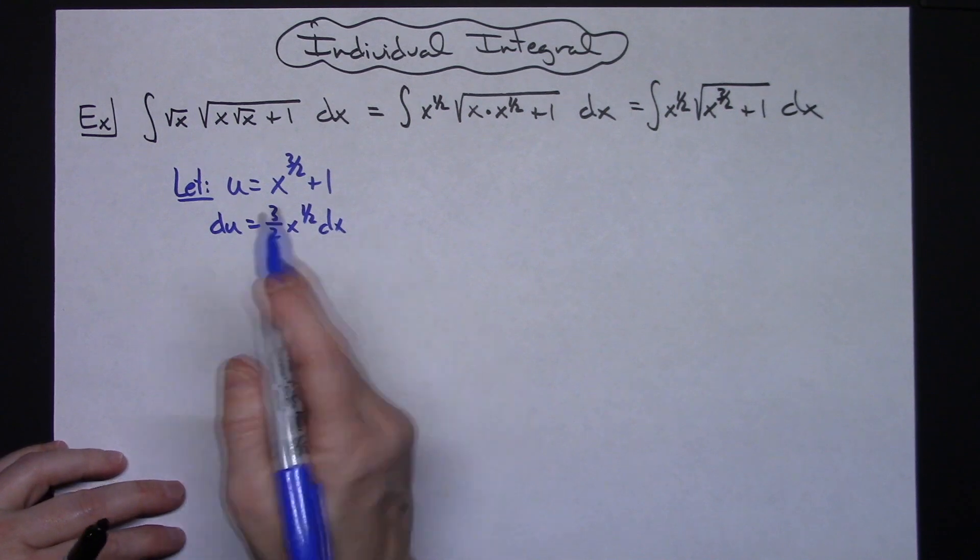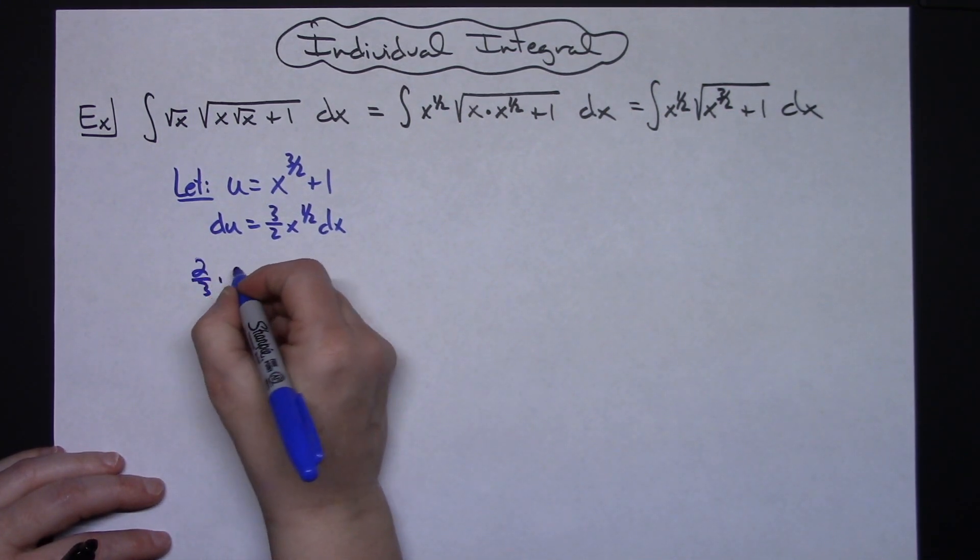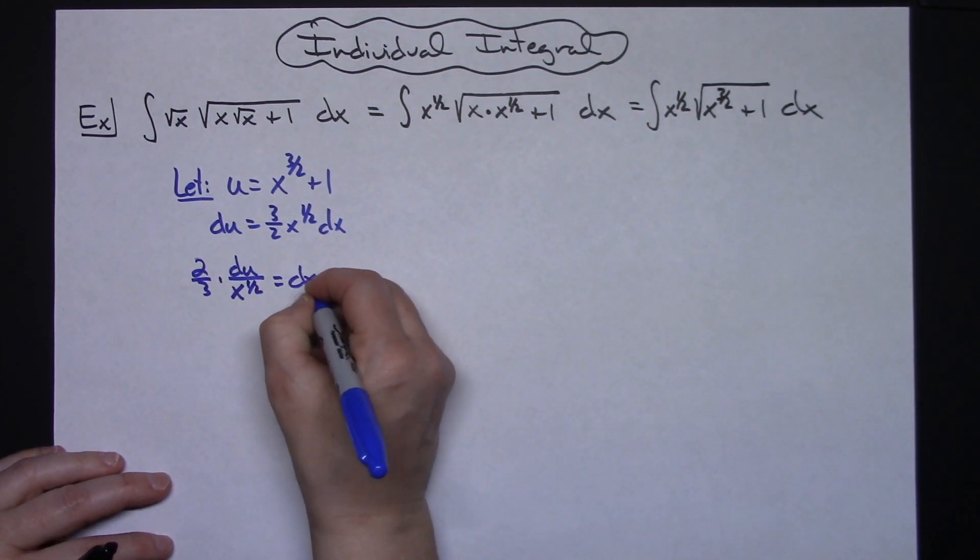And then I do want to solve for dx so then that's going to give me a 2 thirds times du over an x to the 1 half is equal to dx.